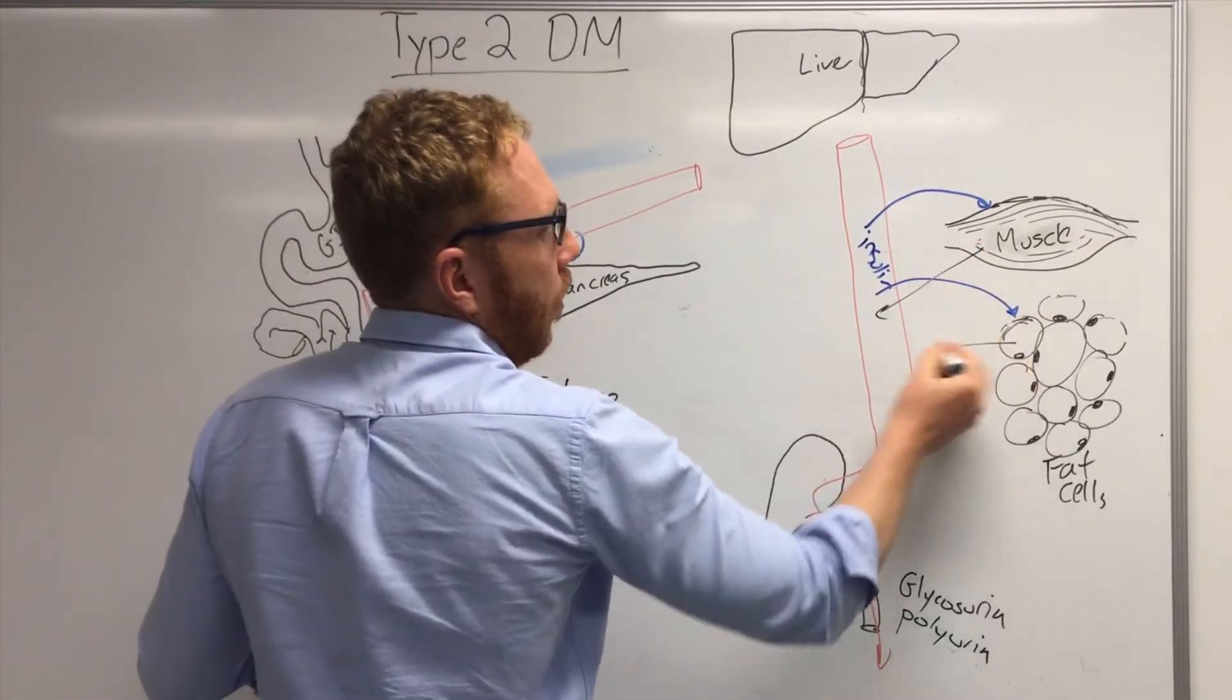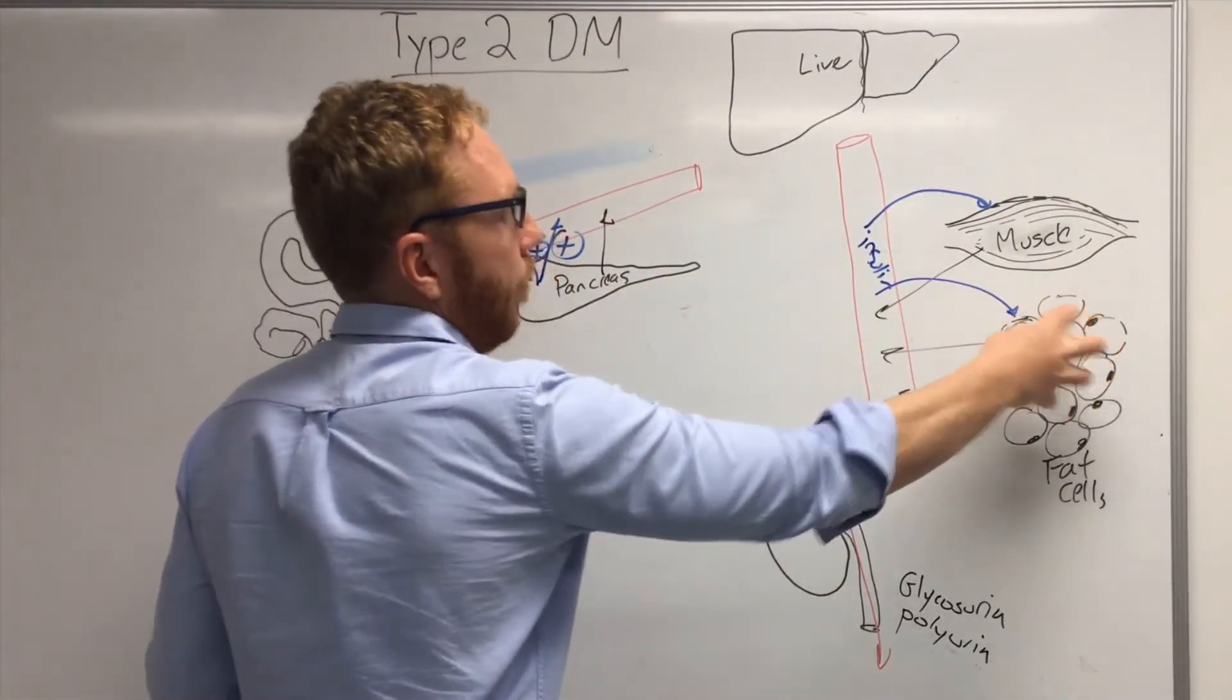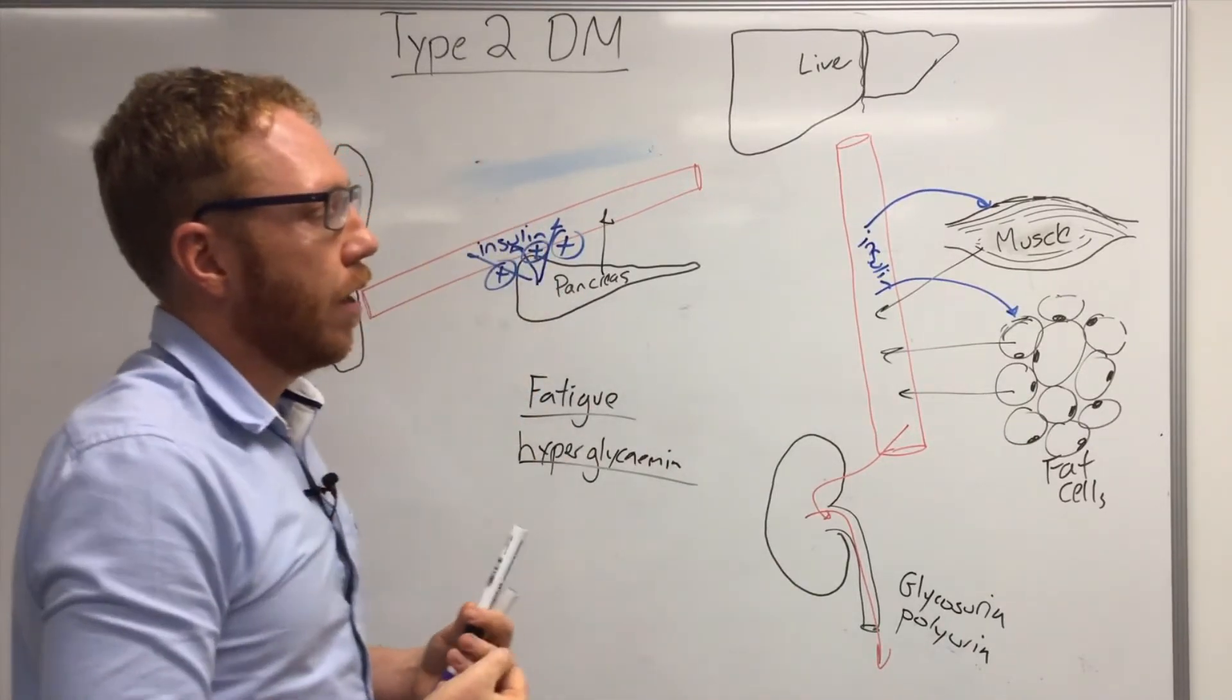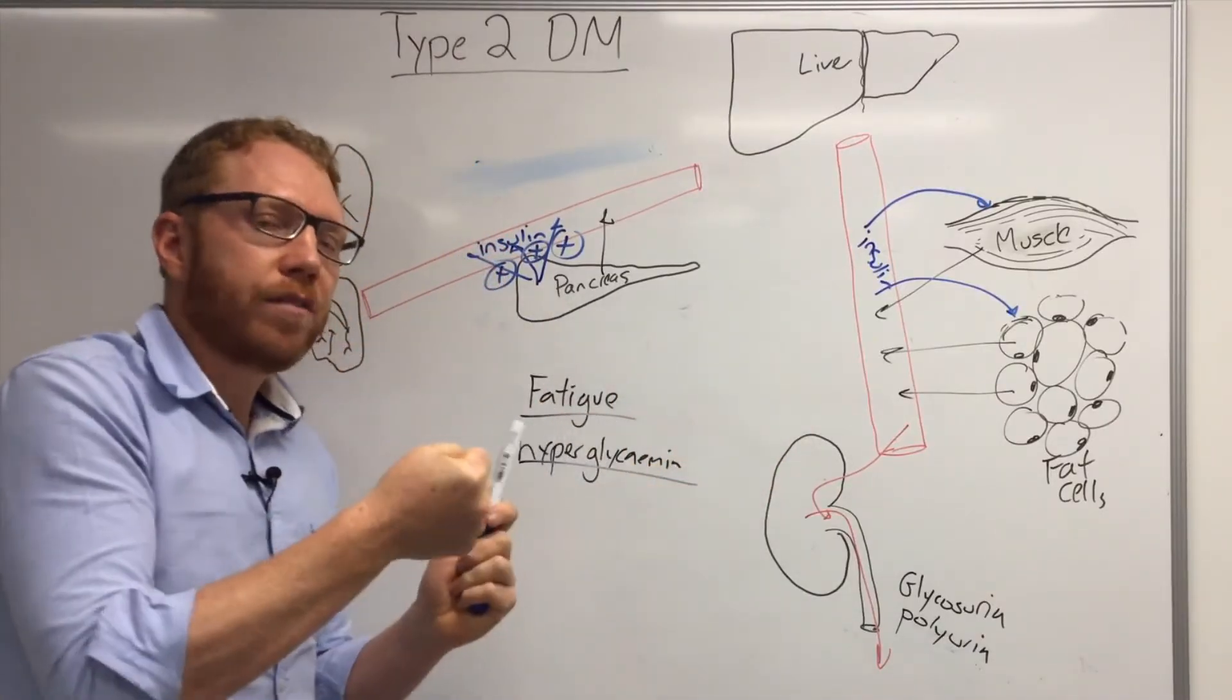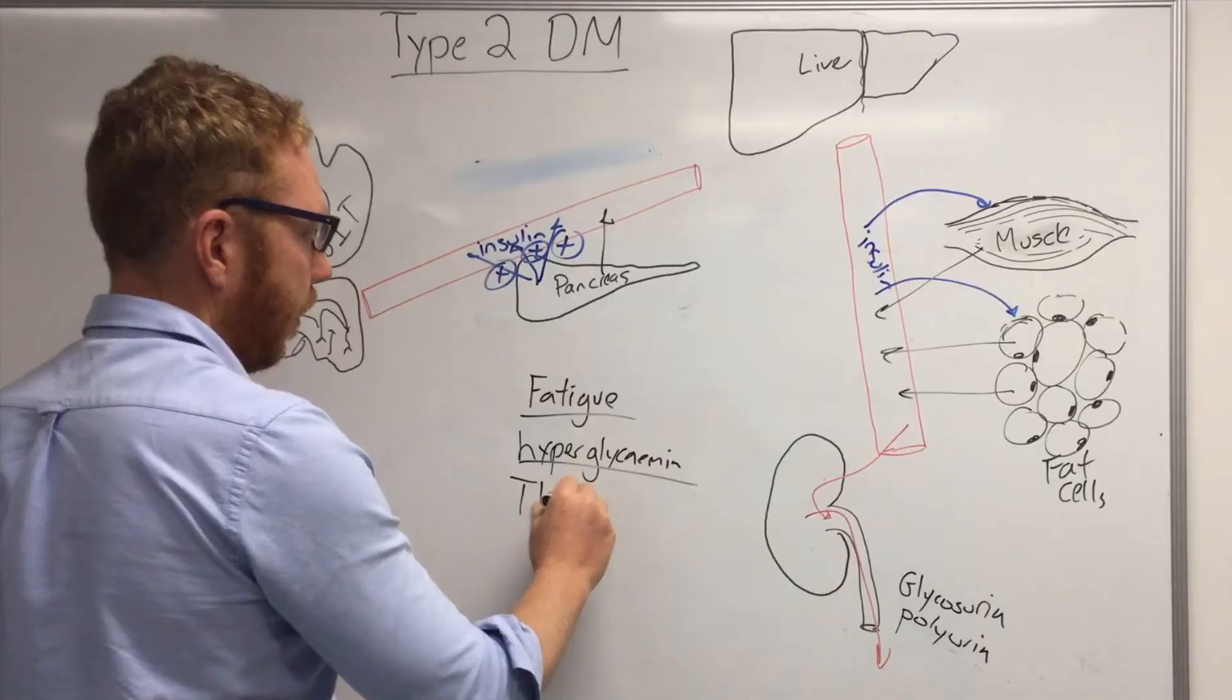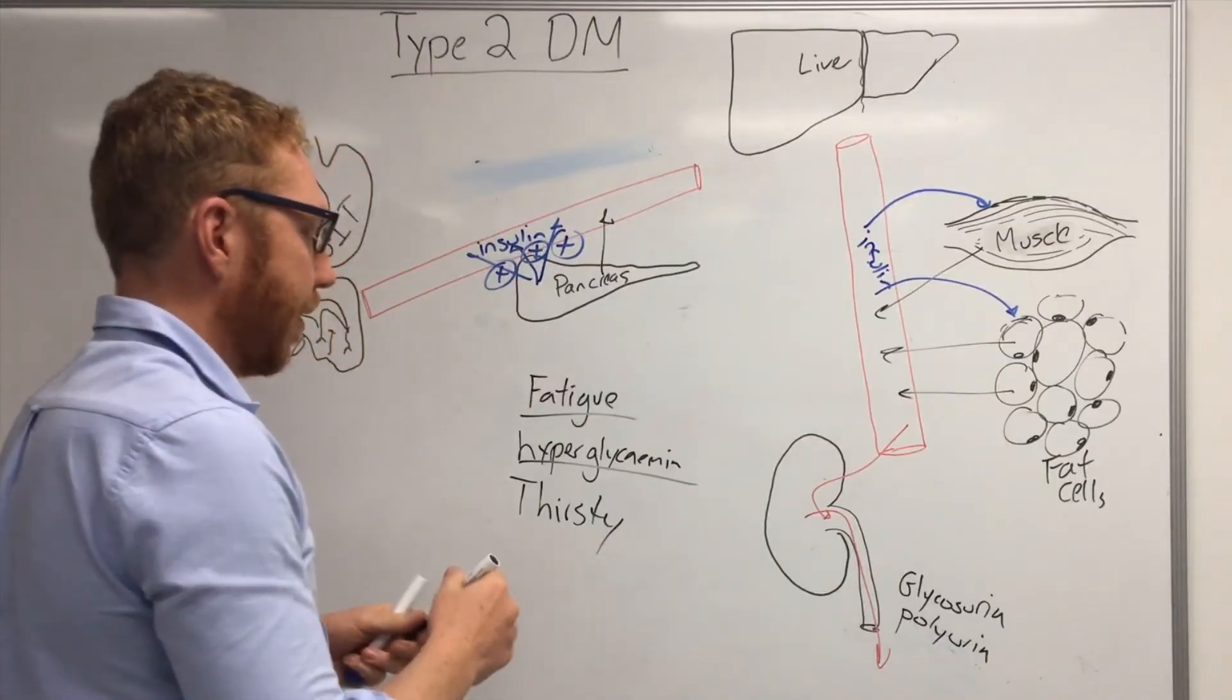Now because sugar is still everywhere, it's going to draw fluid from all the cells in the body, which is going to dehydrate them, even in the brain. And that's going to make more fatigue and problems with thinking and so forth. That's caused from the hyperosmolar drawing effect. This hyperosmolar effect will also make a person thirsty, that's called polydipsia, and possibly also hungry.